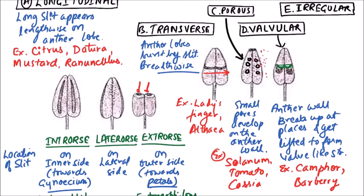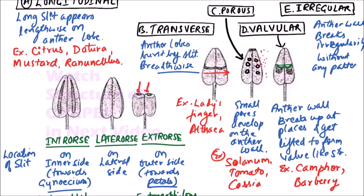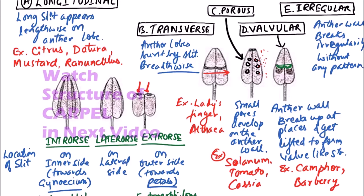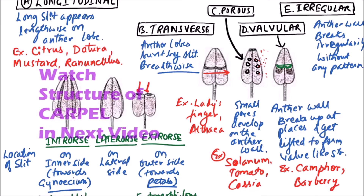The last type is irregular dehiscence. In this type, the anther wall breaks irregularly, without any pattern. The example includes Najas.